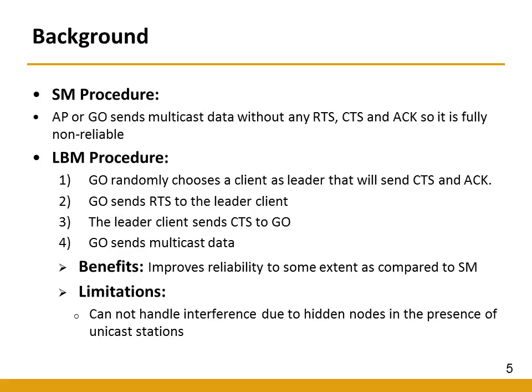LBM works as follows: the group owner randomly chooses one client as leader that will send CTS and ACK. The group owner sends RTS to the leader client, and the leader client sends CTS back. If successful, the group owner sends multicast data. It improves reliability somewhat compared to standard multicast, but it cannot handle interference due to hidden nodes in the presence of unicast stations — stations that send or receive unicast data with the AP and are not part of the Wi-Fi Direct group.